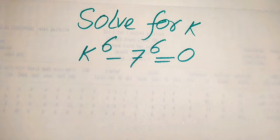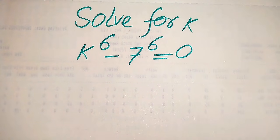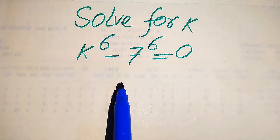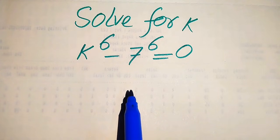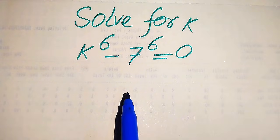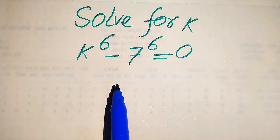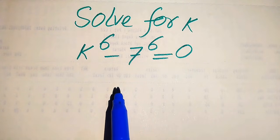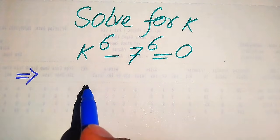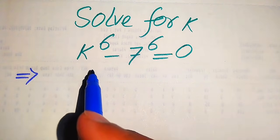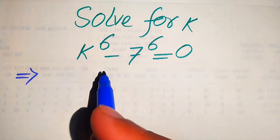Hello everyone. How to solve this problem for the values of k, if we have k to the power of 6 minus 7 to the power of 6 equals 0? We solve this problem for all the values of k. You can see that this is a sixth-order equation, which means that this equation has 6 roots. We need to find all 6 roots of this equation, and now we move toward the solution.